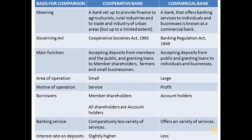Cooperative bank: a bank set up to provide finance to agricultural, rural industries, and to trade and industry of urban areas, and it serves only a limited extent. Whereas commercial bank: it's a bank that offers banking services to individuals and businesses.